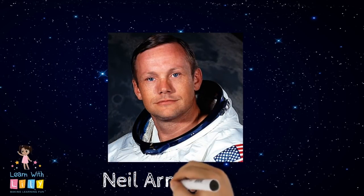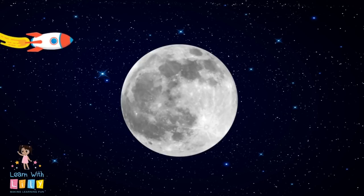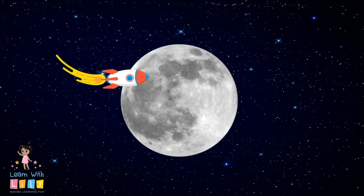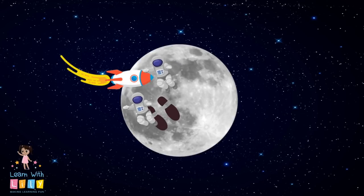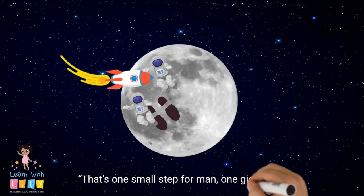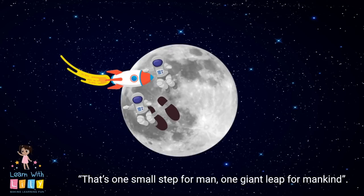Do you know who this is? This is Neil Armstrong. He was the first person to step on the Moon. Isn't that amazing? He, along with fellow astronaut Buzz Aldrin, stepped out of the spacecraft, the Eagle, on July 21, 1969, and said the very famous words: That's one small step for man, one giant leap for mankind.